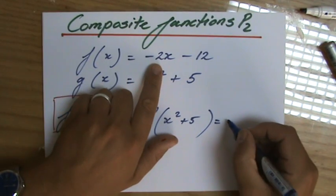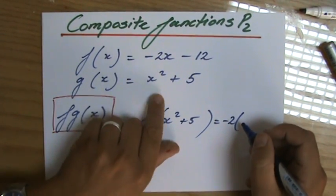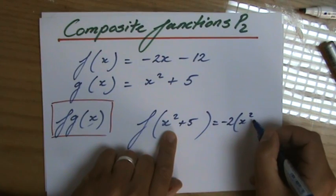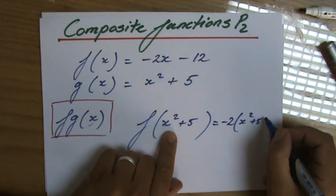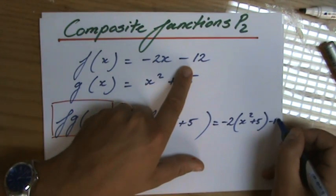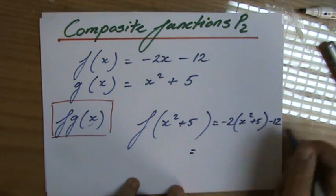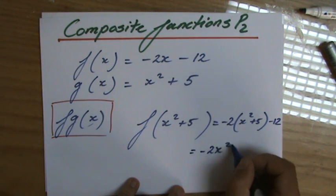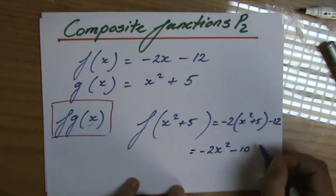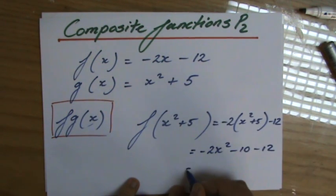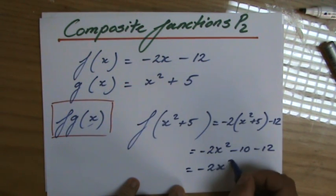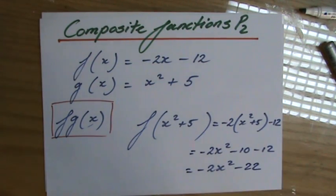So, minus 2 times x becomes minus 2 times x squared plus 5, because that's the function g, minus 12. We expand those brackets, minus 2 times x squared, minus 10, minus 12, and we simplify by combining the like terms, minus 2x squared minus 22. So, that is the answer to this problem.